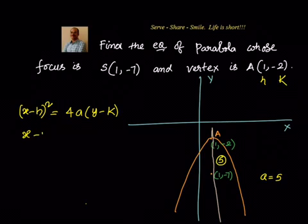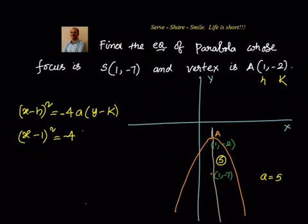We can go ahead and substitute. We get: (x - 1)² = -4 × 5 × (y - k), which gives us (x - 1)² = -20(y + 2).